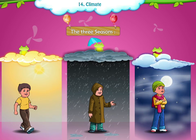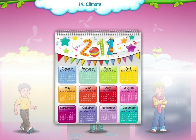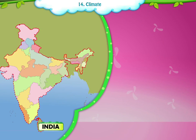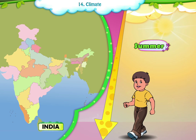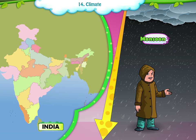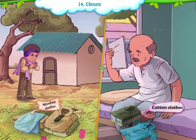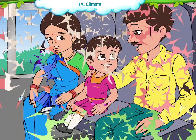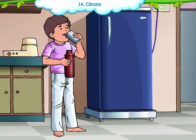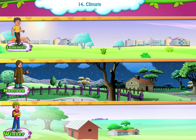The Three Seasons. A season is a period in a year when the weather stays the same for several days. In our country, we have three main seasons: summer, the monsoon or rainy season, and the winter season. The clothes we wear, the food we eat, the way we travel, and things we do all depend on the season. Let us take a closer look at the three main seasons.